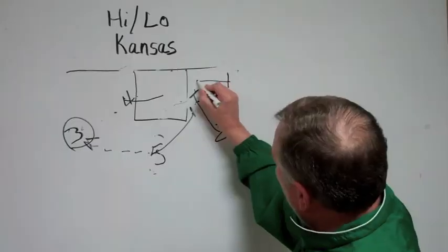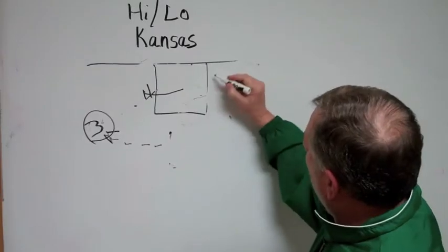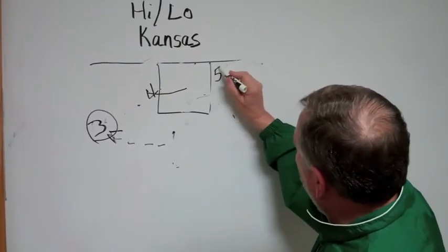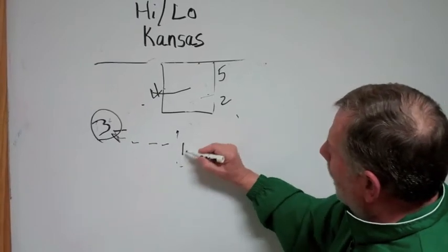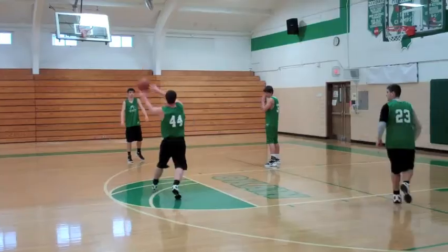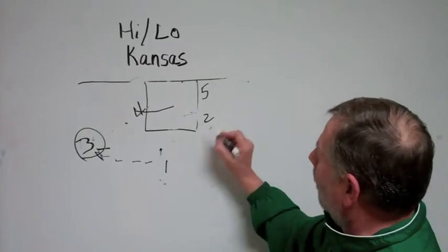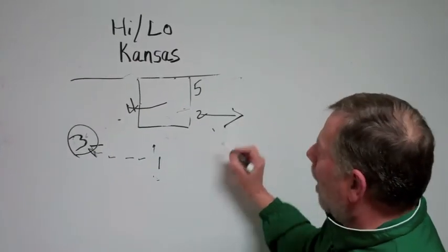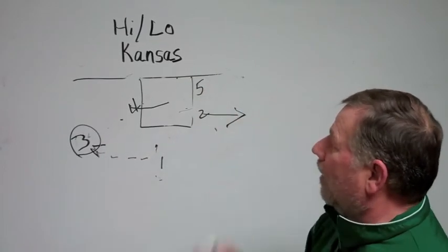set a stagger screen. One will take his guy here and come across the stagger screen. We will have five down here, two down here, one back here. And one has come off that stagger screen and should have an open shot right in here. If we don't have it, we're right back where we started over again. Two will just pop right back out. We're right back in our initial set. We're going the same thing over again.